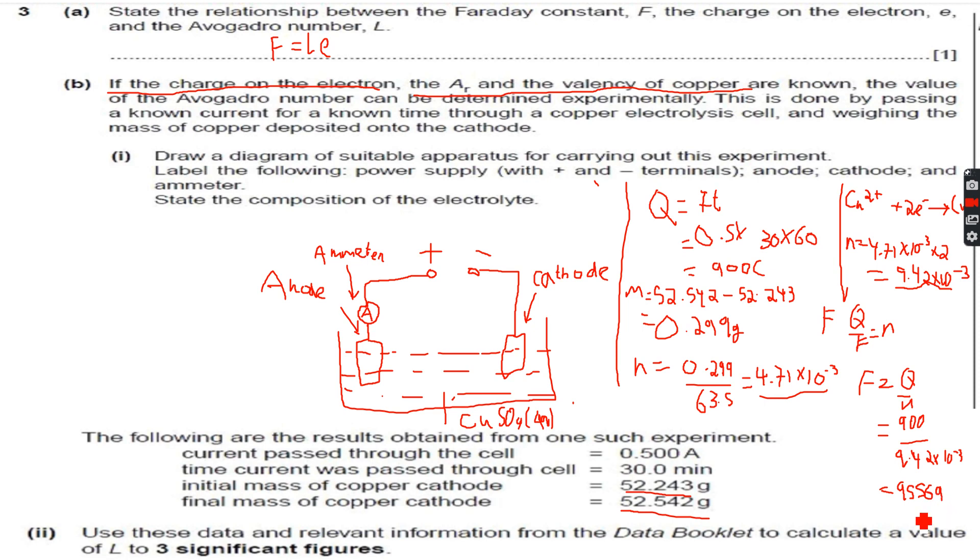You can see that the value we know for the Faraday constant is 96500, and this value is fairly close. This means we are on the right path.